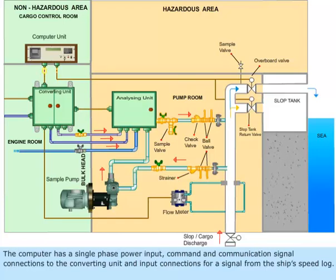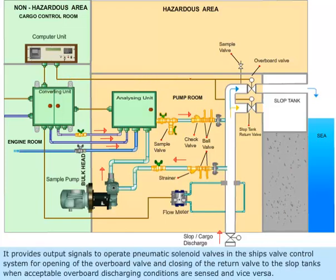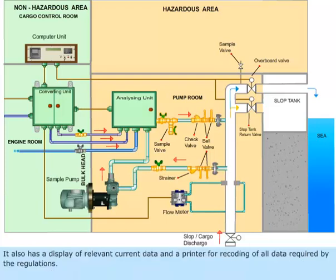The computer has a single phase power input, command and communication signal connections to the converting unit, and input connections for a signal from the ship's speed log. It provides output signals to operate pneumatic solenoid valves in the ship valve control system for opening the overboard valve and closing of the return valve to slop tanks when acceptable overboard discharging conditions are sensed, and vice versa. It also has a display of relevant current data and a printer for recording all data required by the regulations.